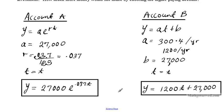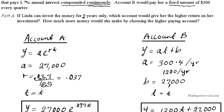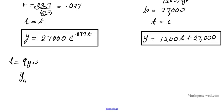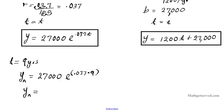The question is: which one grows faster — the one that's compounded continuously or the one with a constant amount every quarter? The problem says nine years, so let's set t equals 9. For account A, we get y sub A equals 27,000 times e to the parenthesis 0.037 times 9. When entering this in your calculator, please be sure to encapsulate the growth rate and the time in parentheses.